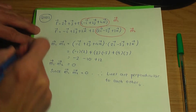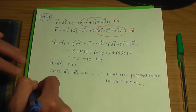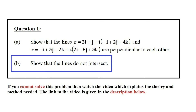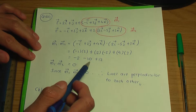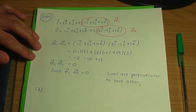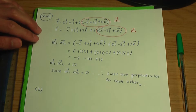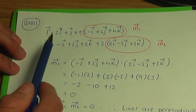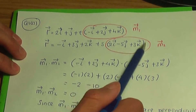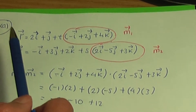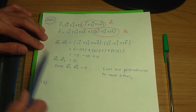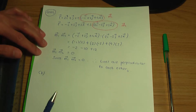Now let's go back to the screenshots. Part B is: show that the lines do not intersect. From part A, the lines are perpendicular, so they are not parallel. Just for your interest, to show lines are parallel, check if one direction vector is a scalar multiple of the other — but in this question the lines are not parallel; we've proved they are perpendicular.